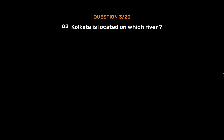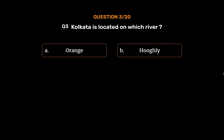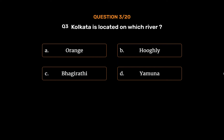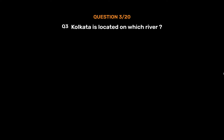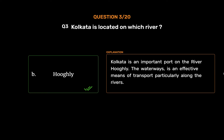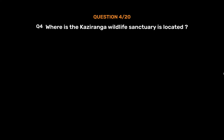Question number 3. Kolkata is located on which river? Option A: Orange. Option B: Hugli. Option C: Bhagirathi. Option D: Yamuna. The correct answer is Option B, Hugli. Kolkata is an important port on the river Hugli. The waterways are an effective means of transport, particularly along the rivers.